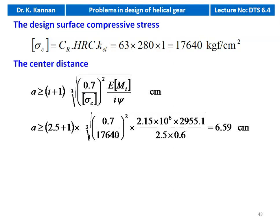We calculate the center distance using: A ≥ (i+1) × ∛[0.7/sigma_c² × (E × MT)/(i × psi)]. Substituting: A ≥ (2.5+1) × ∛[(0.7/17,640²) × 2.15×10^6 × 2955.1 / (2.5 × 0.6)]. The center distance A = 6.59 cm; the value should be higher than 6.59 cm.